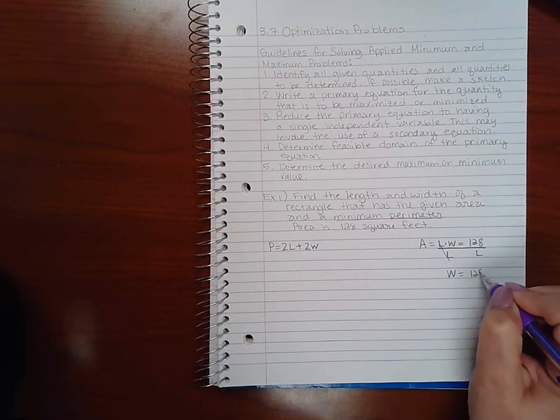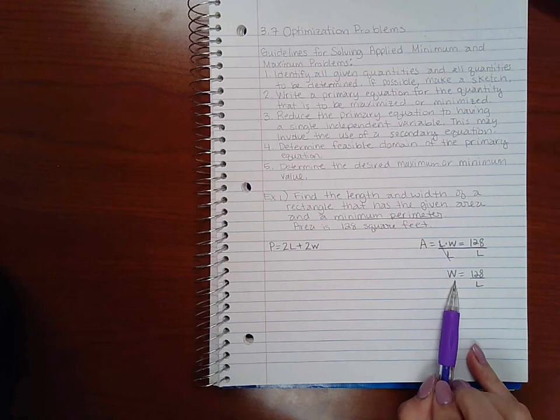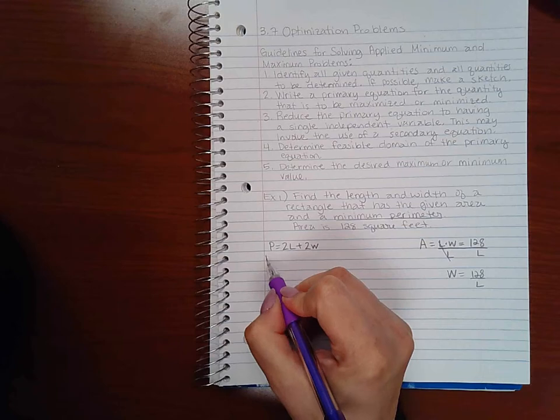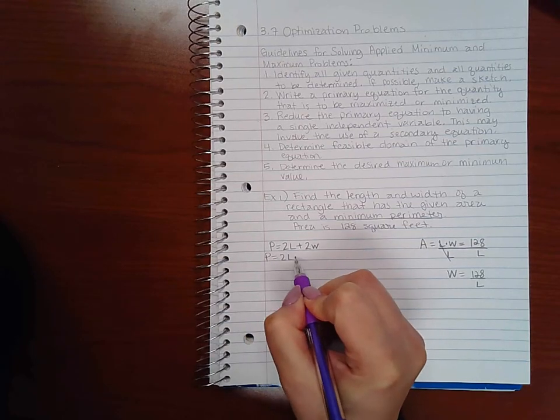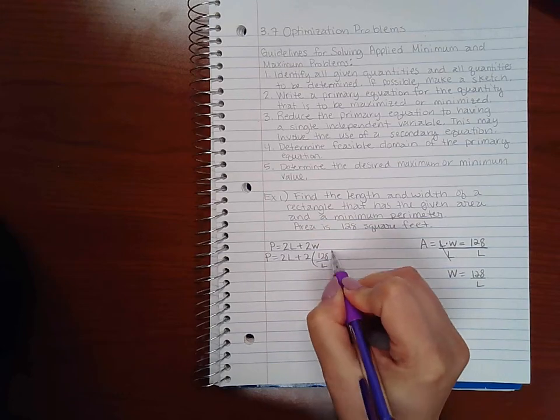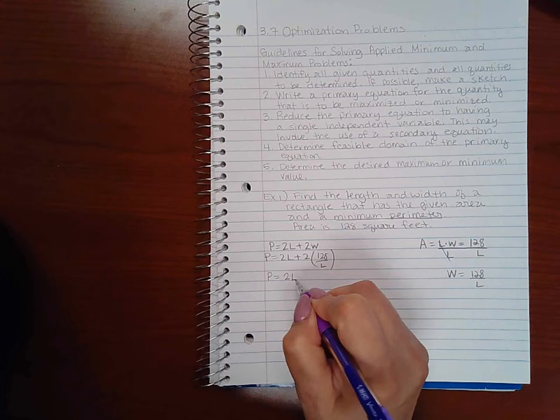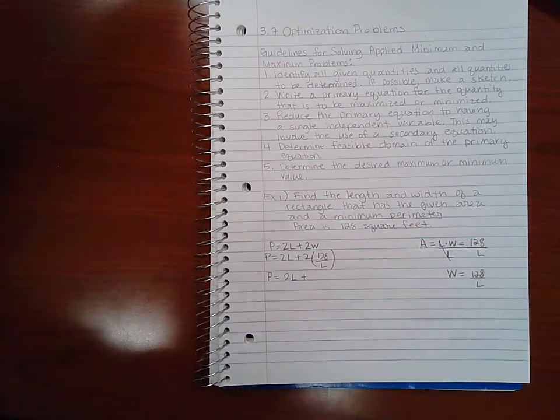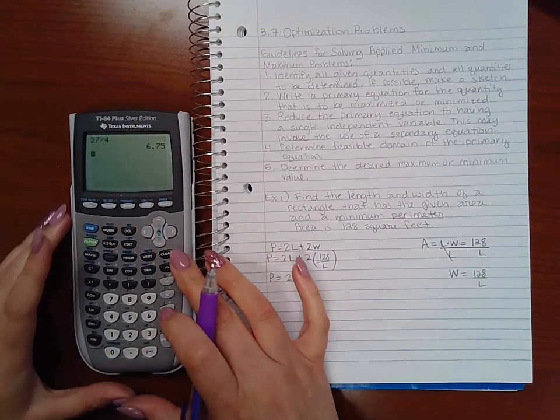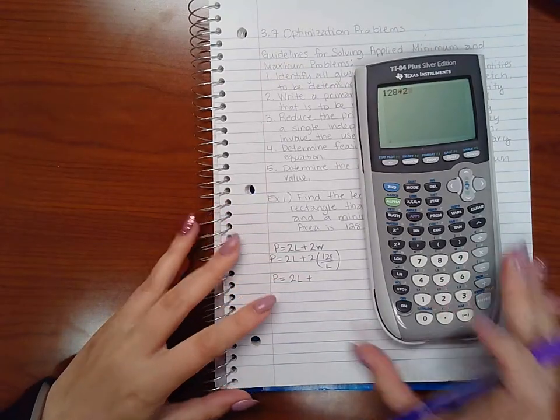What I'm going to do is I'm just going to divide both sides by L and I get that W equals 128 over L. So I will use this later but for now I'm going to go ahead and plug that in. So instead of W in my primary equation, I'm going to write 128 over L since that's what W is equal to. Then if I reduce this, I end up with 2L plus, what is that, 256.